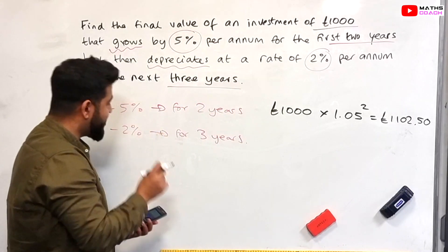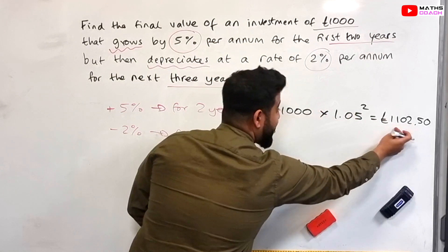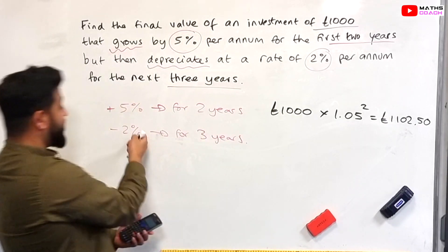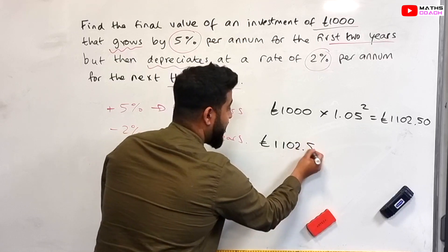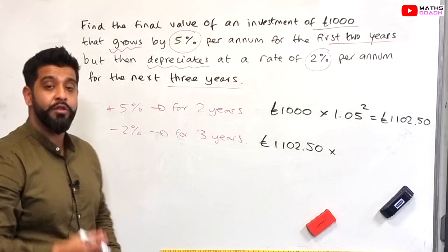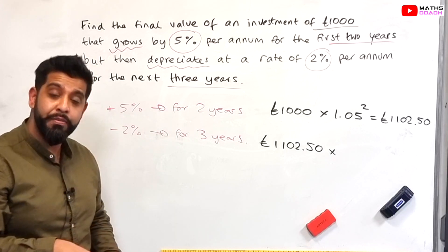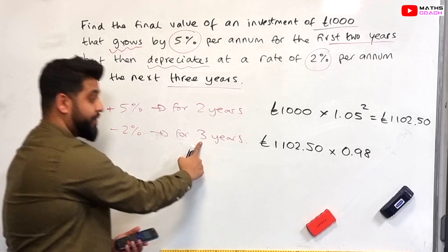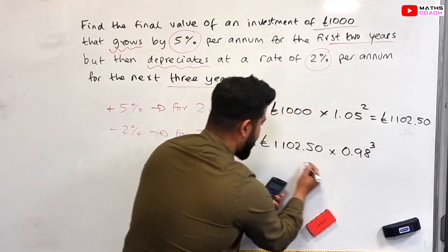Now what is going to be our original amount now? When we do this calculation our original amount isn't going to be this anymore. Remember we've got this at the end of two years. So this is now going to become our original amount for the next three years with this new decrease that we are going to be facing. So we are going to do £1,102.50 times by a new multiplier. Now this time we are having a depreciation, so it's going to go down by 2%. So we're going to do 100 minus 2 which is 98%. And we make the 98% into a multiplier by dividing by 100, so we get 0.98. And the power is going to be three years. So it's going to be 0.98 to the power of three.